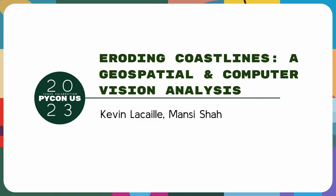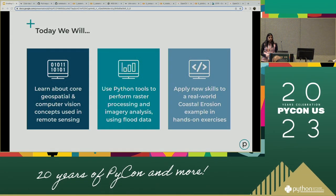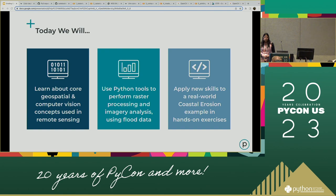So in today's workshop, we will first talk about some core geospatial and computer vision concepts used in remote sensing. Then we will use this understanding in the context of Python tools to do some raster and imagery processing and analysis. For the example section, we're going to use flood data, and then Kevin is going to take us through a real-world example of analyzing coastal erosion using all of this.